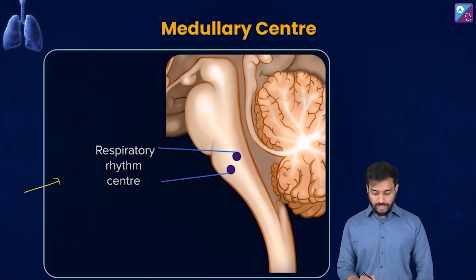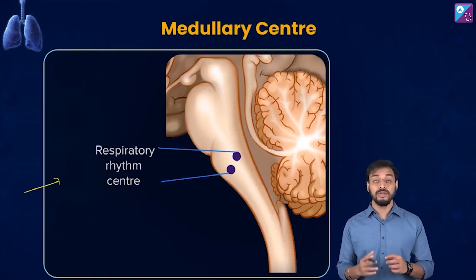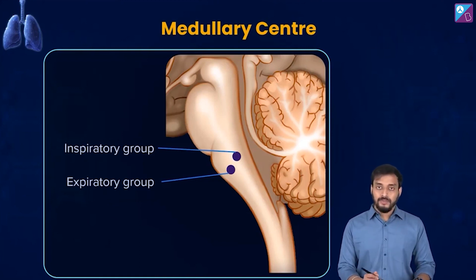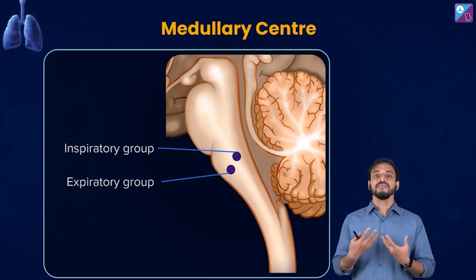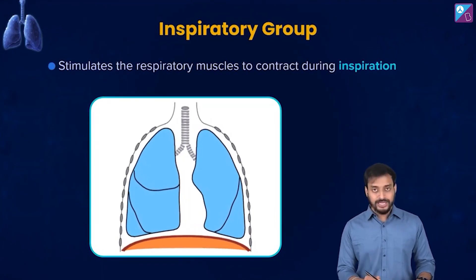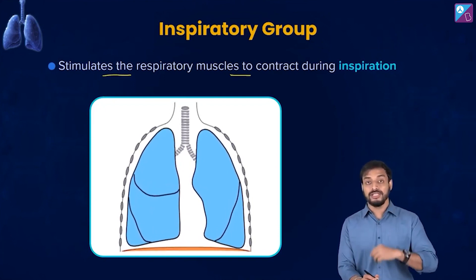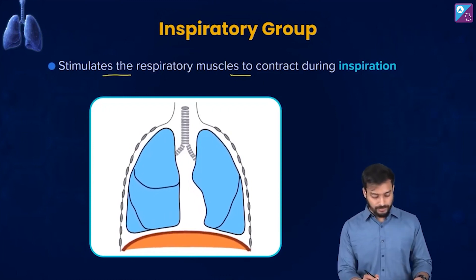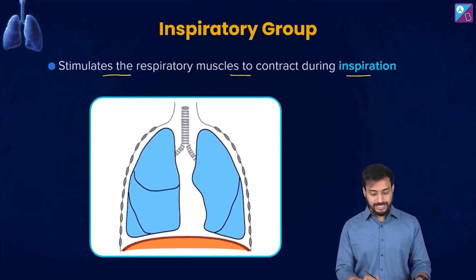The respiratory rhythm center is a specialized center present in the medulla region of the brain. It is primarily responsible for the regulation of respiration. It involves the inspiratory group and the expiratory group. The inspiratory group stimulates the respiratory muscles — the diaphragm and the intercostal muscles — to contract during inspiration.